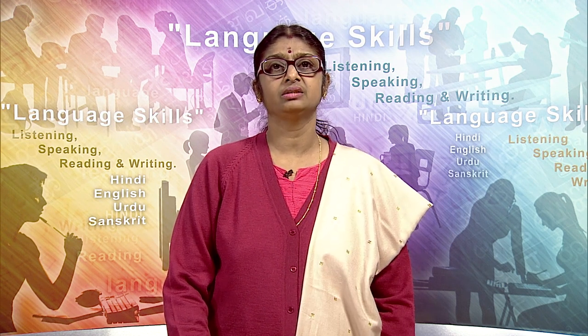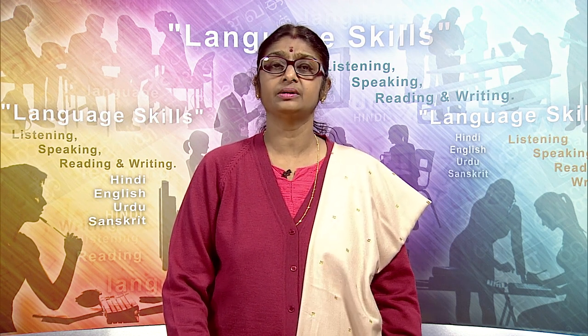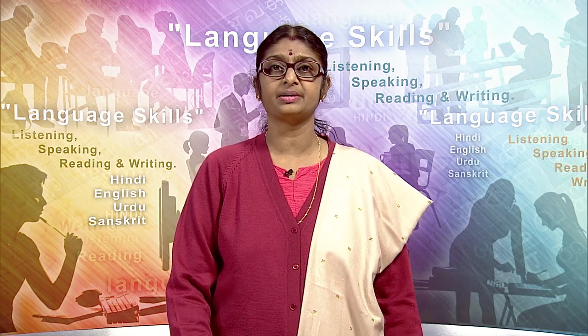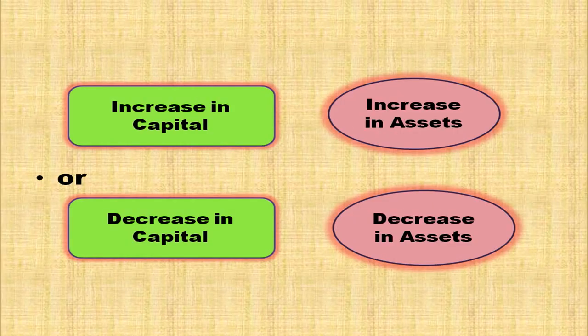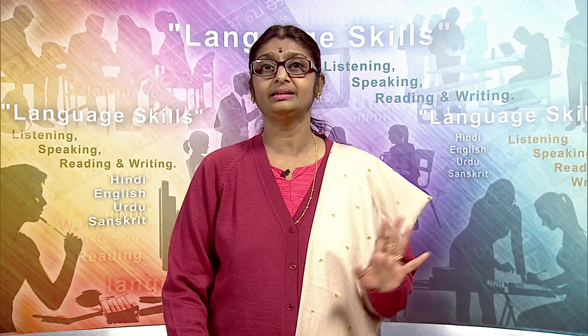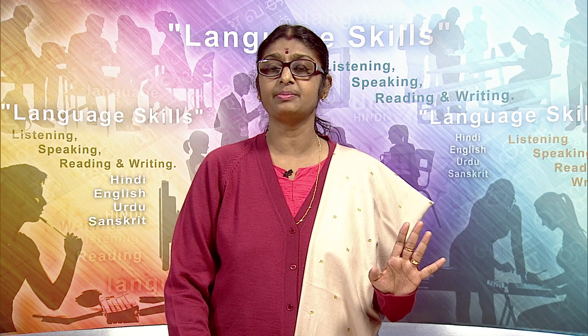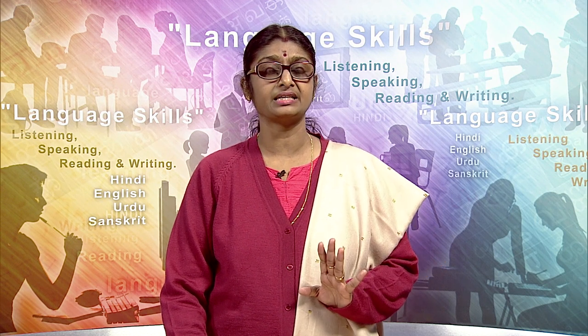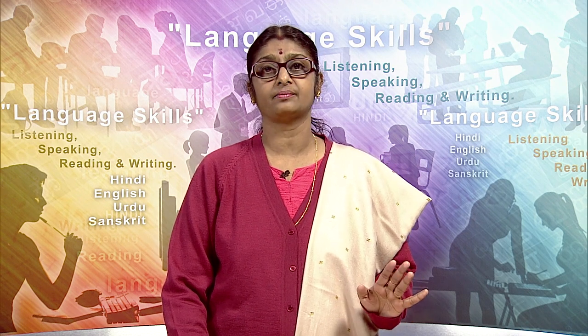In the accounting equation, every transaction will show either an increase in capital or increase in assets, or a decrease in capital or decrease in assets. It can appear in any of these four combinations — some combination will always be present.